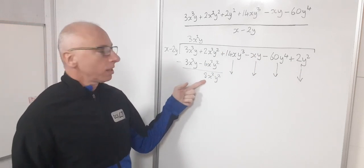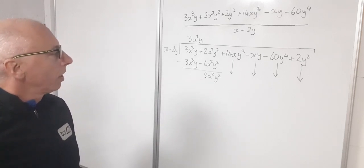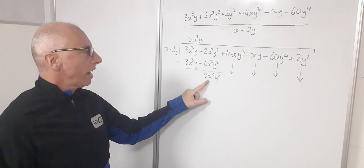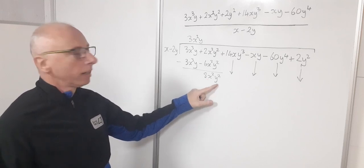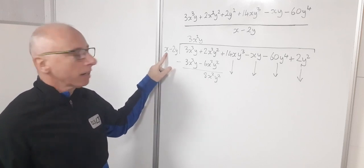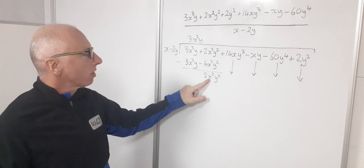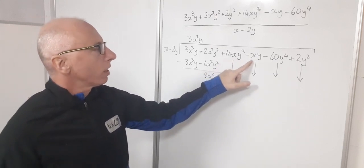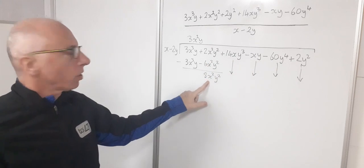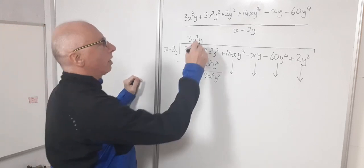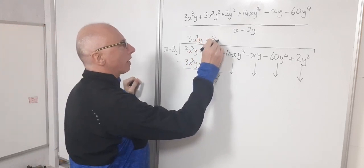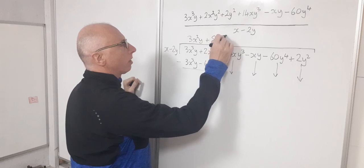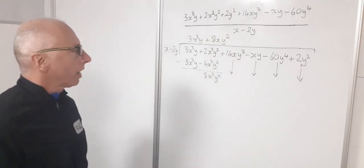So now I'll concentrate on this part of my solution. I've got 8x²y². So now I'll divide that by x and I'll get 8xy². Now there's no corresponding x and y² terms, so I'm just going to write 8xy² just over here. So 8xy². So that takes care of that.